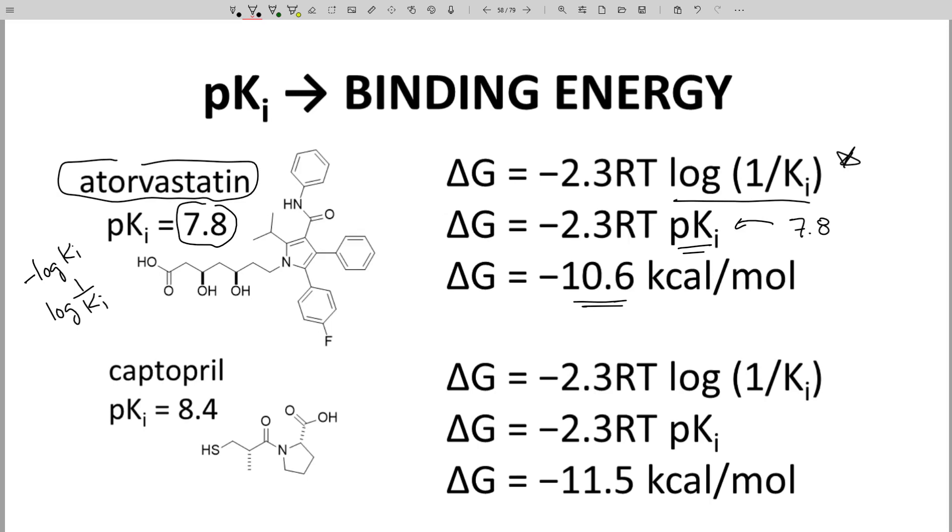There's another drug shown at the bottom. It's captopril. Captopril is a blood pressure drug. Its potency as an enzyme inhibitor is listed as 8.4. If we go through the math and use 8.4 in place of pKI, we get a binding energy of minus 11.5 kcals per mole. That's a bit stronger than atorvastatin, yet still within the range of a typical drug.